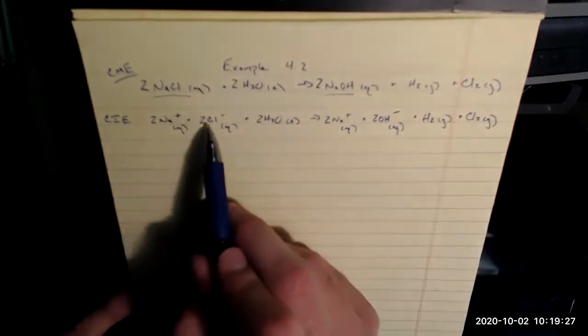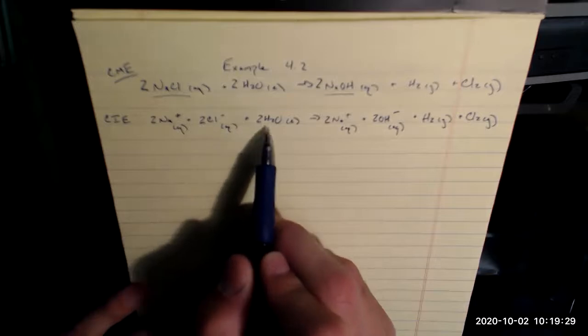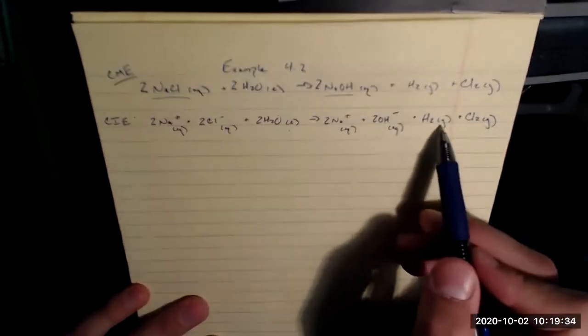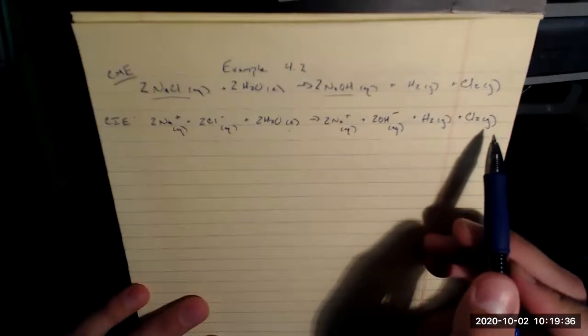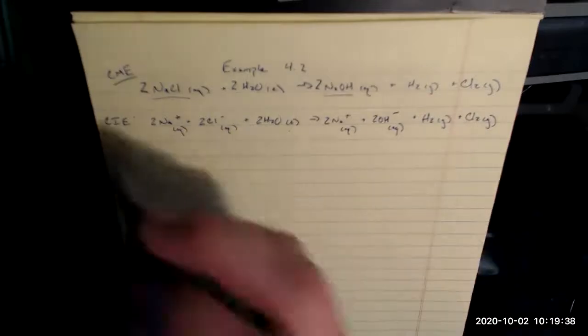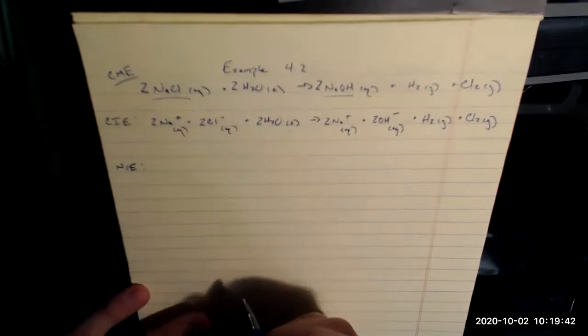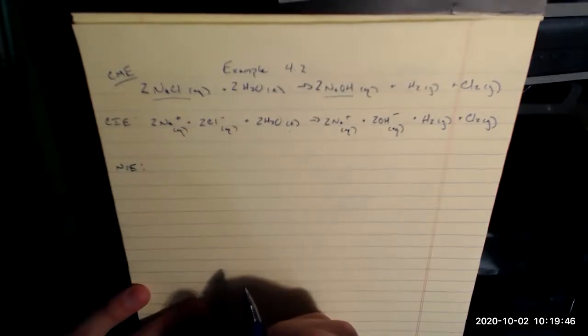Two Na plus aqueous plus two Cl minus aqueous plus two H2O liquid gives two Na plus aqueous plus two OH minus aqueous plus H2 gas plus Cl2 gas. Complete ionic equation. And to get my final answer, in that ionic equation, I cross out my spectator ions. So anything that's on the left and the right and appears unchanged.